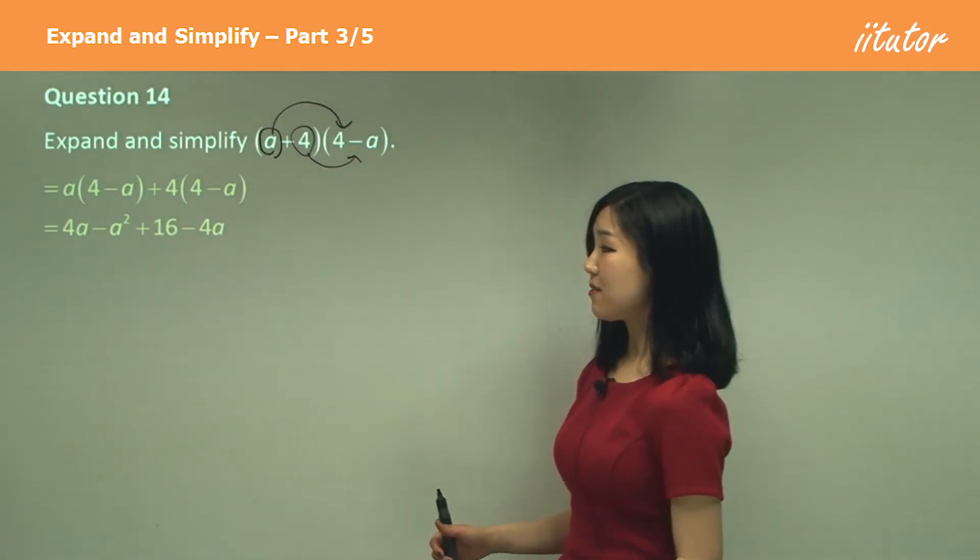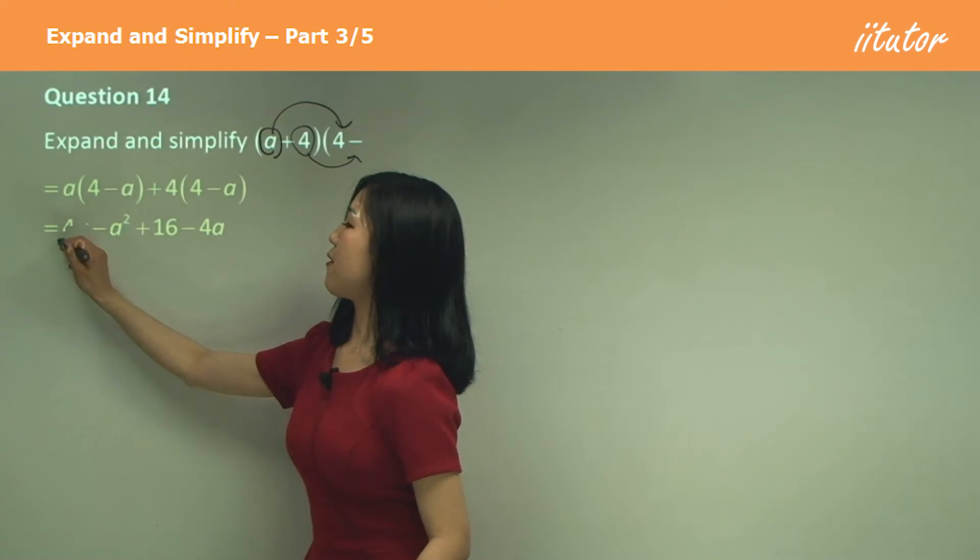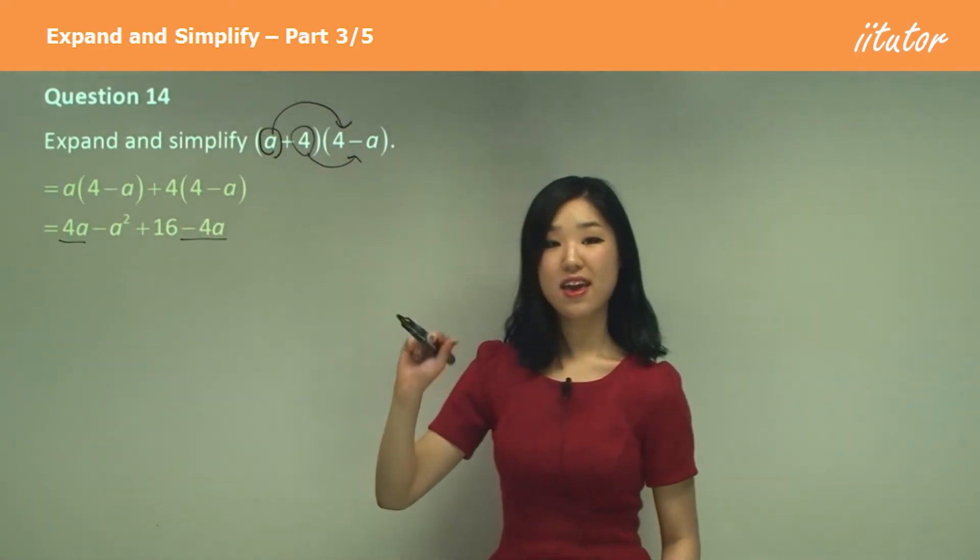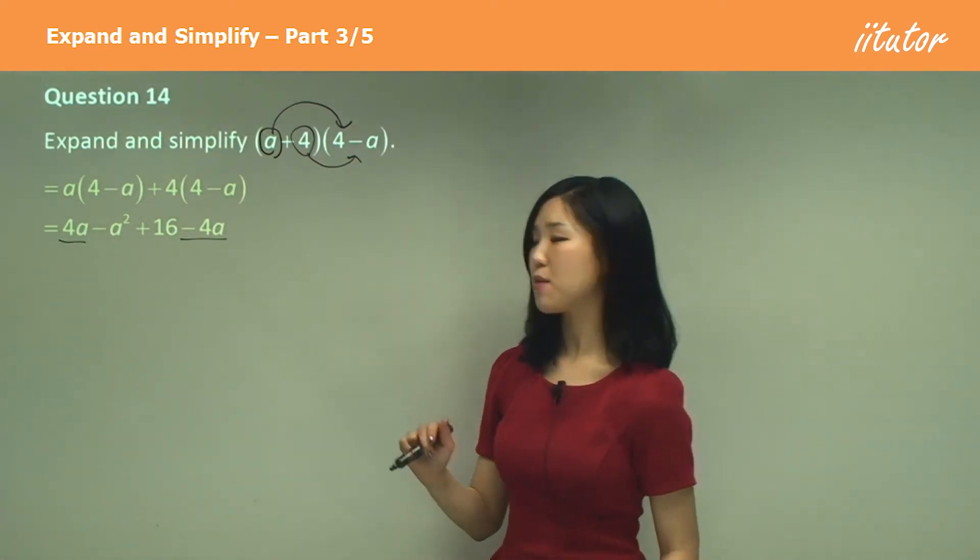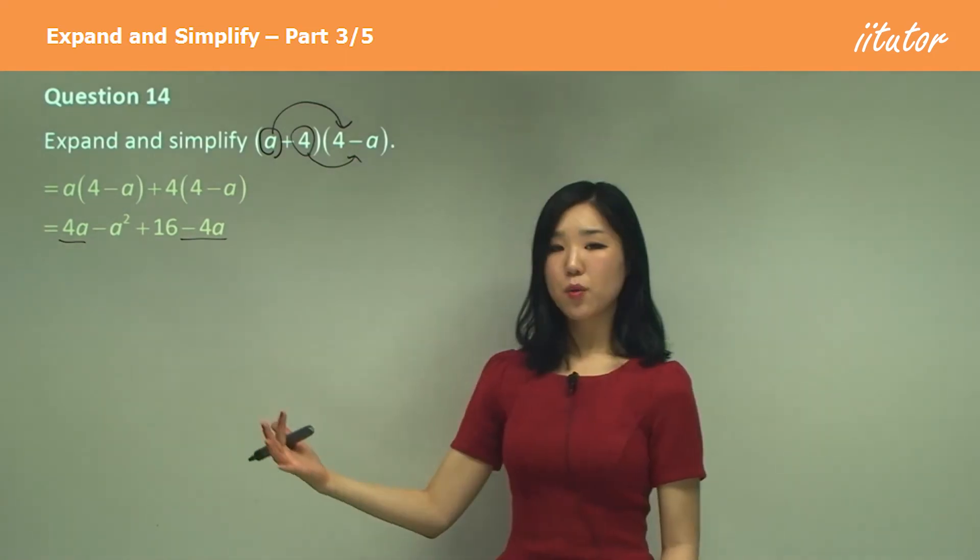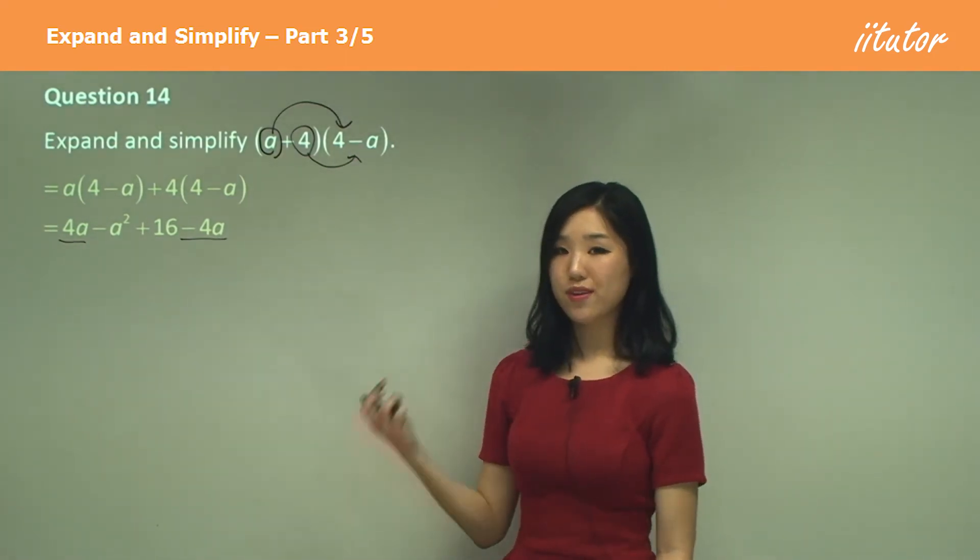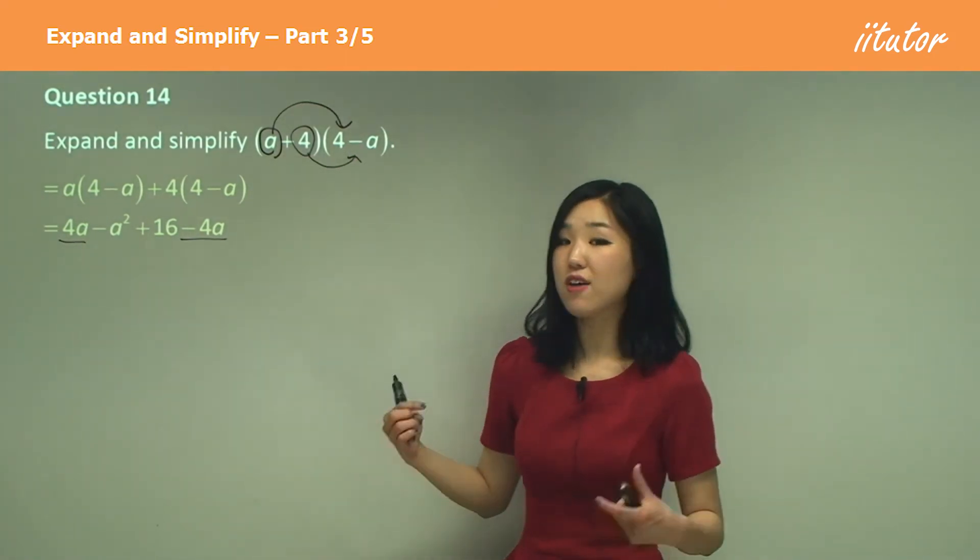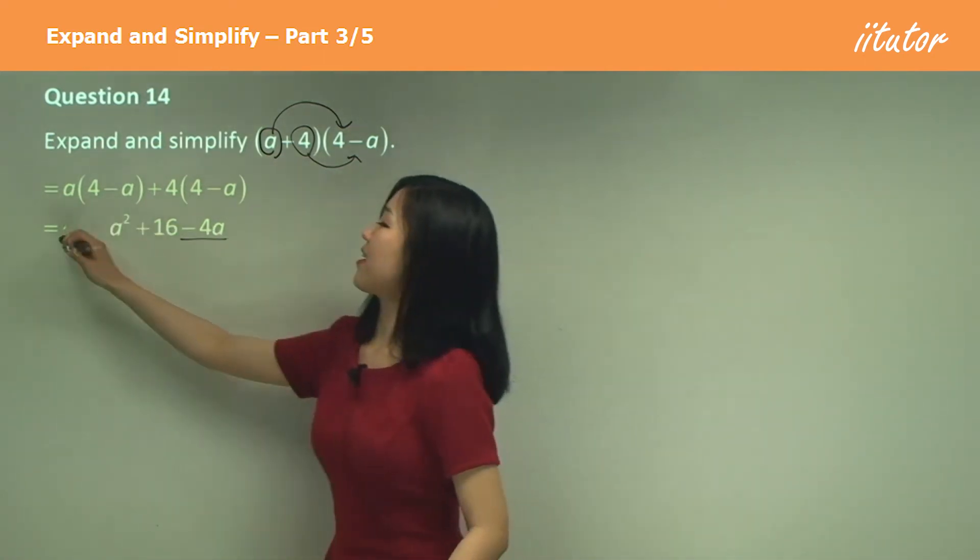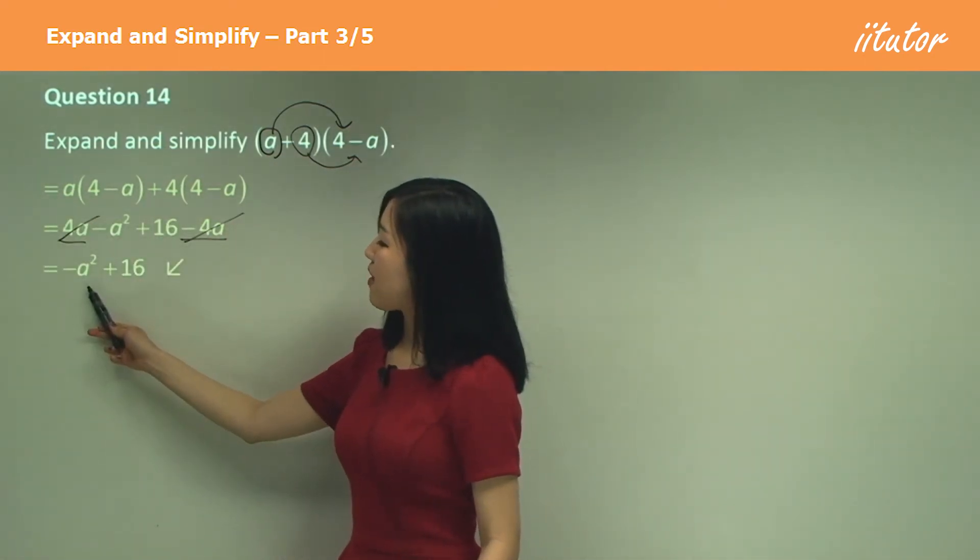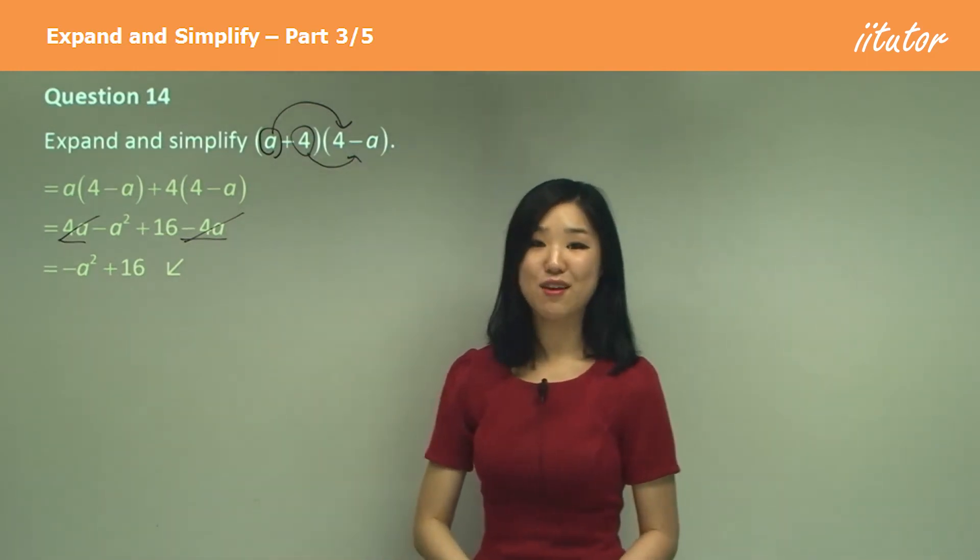Any like terms you can see? We've got a 4a and a negative 4a here. They both have a, so those are like terms. And we don't have any other like terms. What's 4 minus 4? Zero. So we have 0a, which is just zero. So they cancel out. So we just have negative a squared plus 16 left.